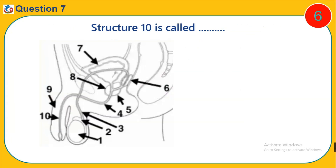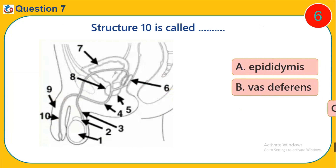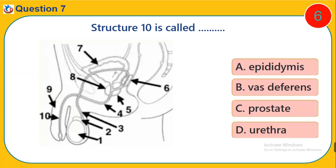Question 7. From the diagram, the structure 10 is called dash. A. Epididymis. B. Vas deferens. C. Prostate. D. Urethra.